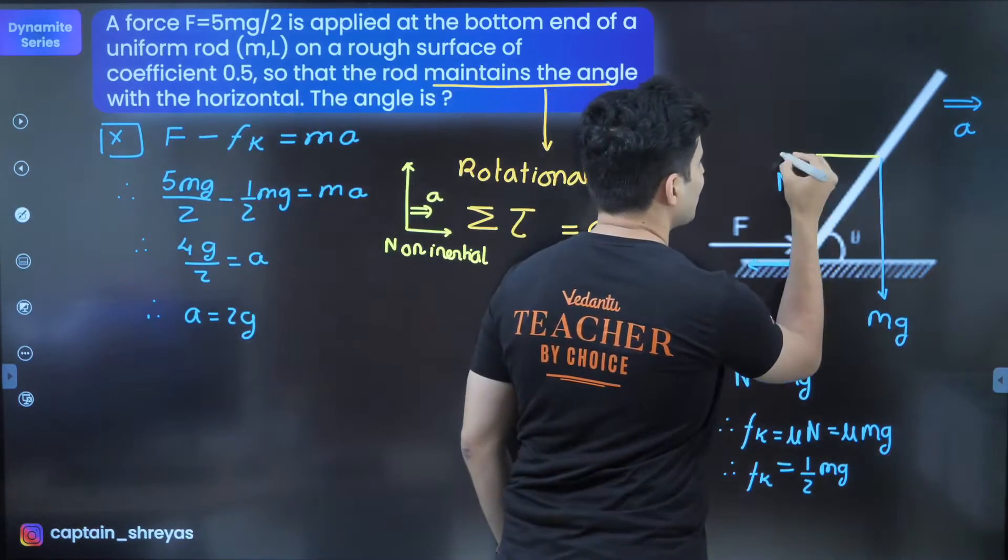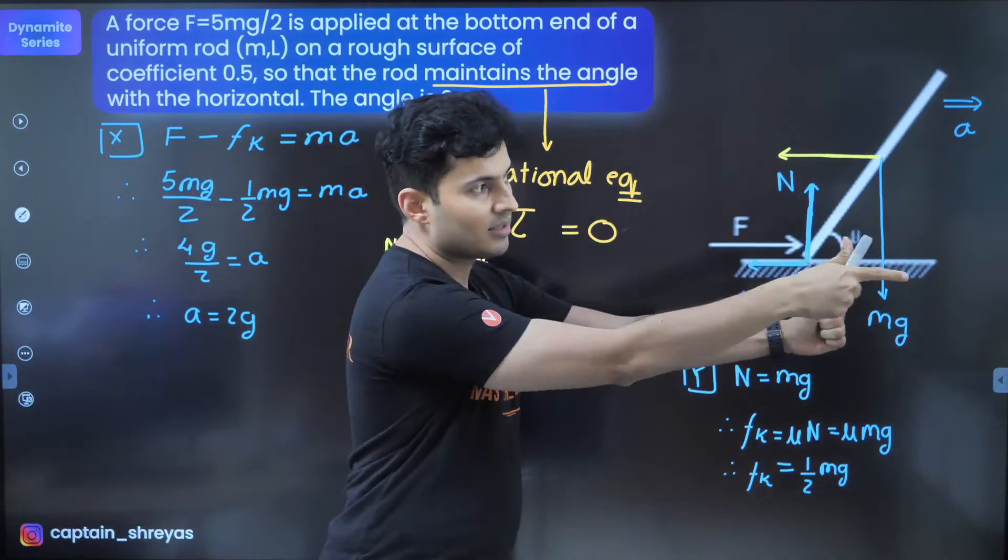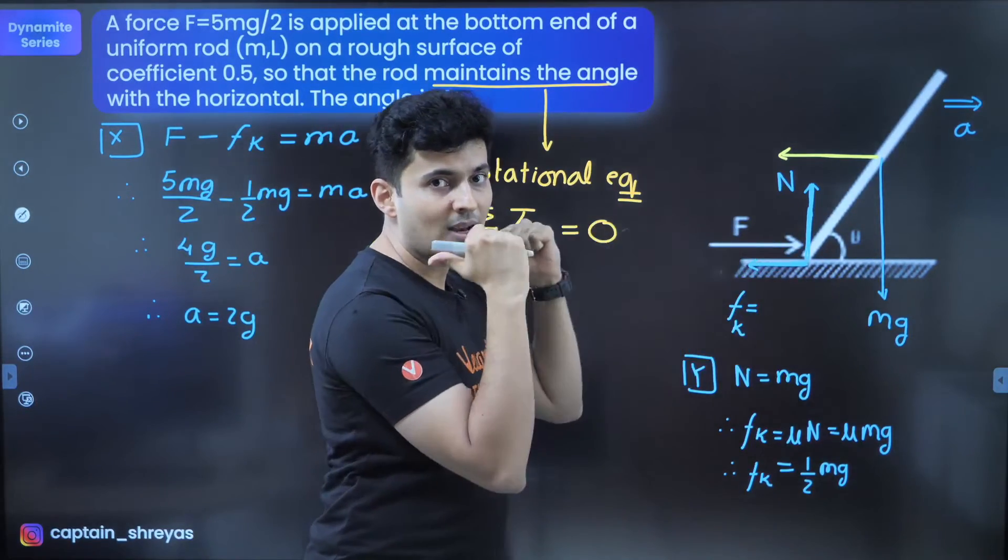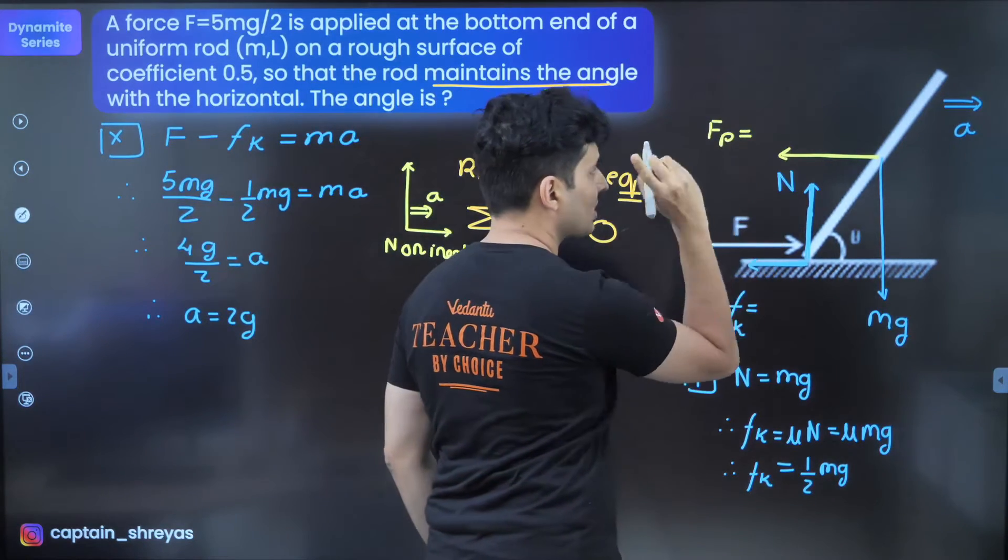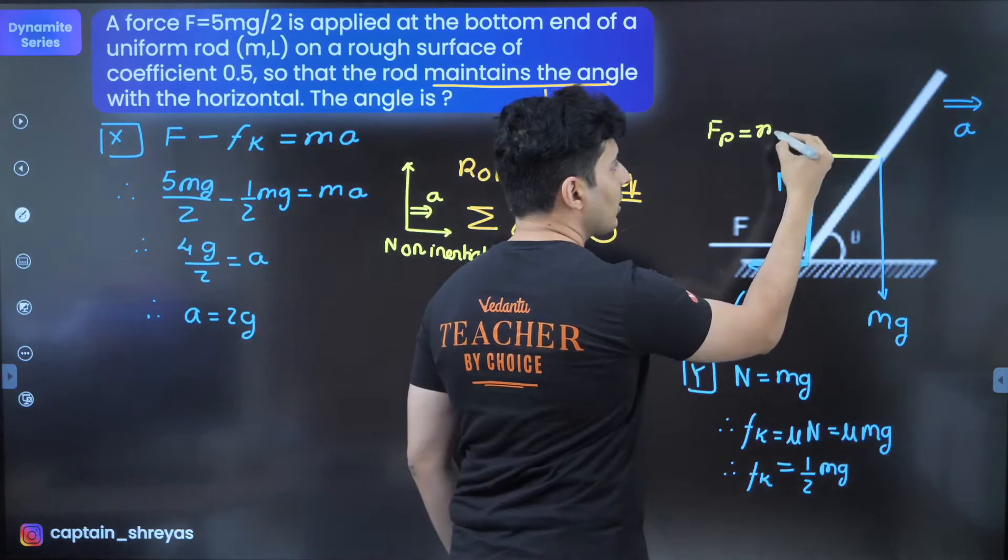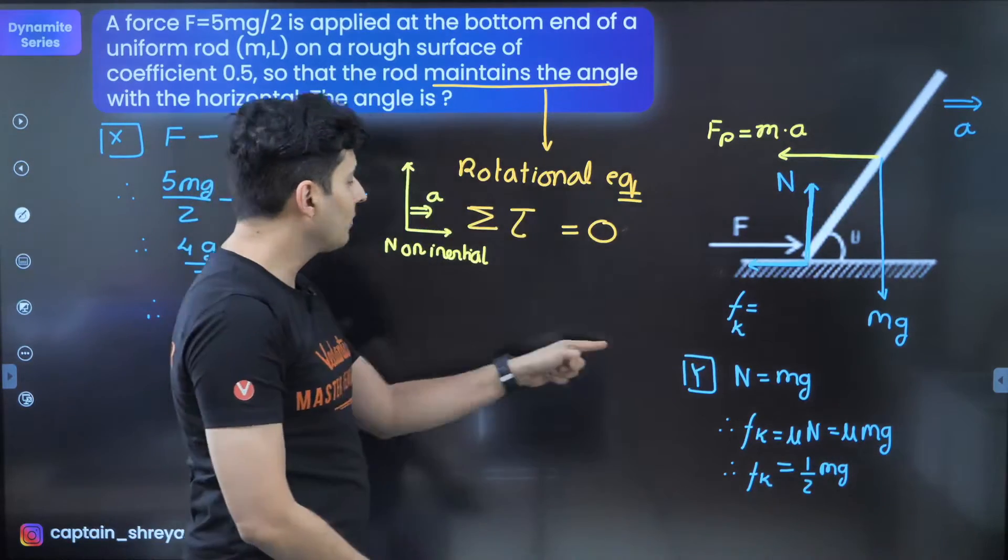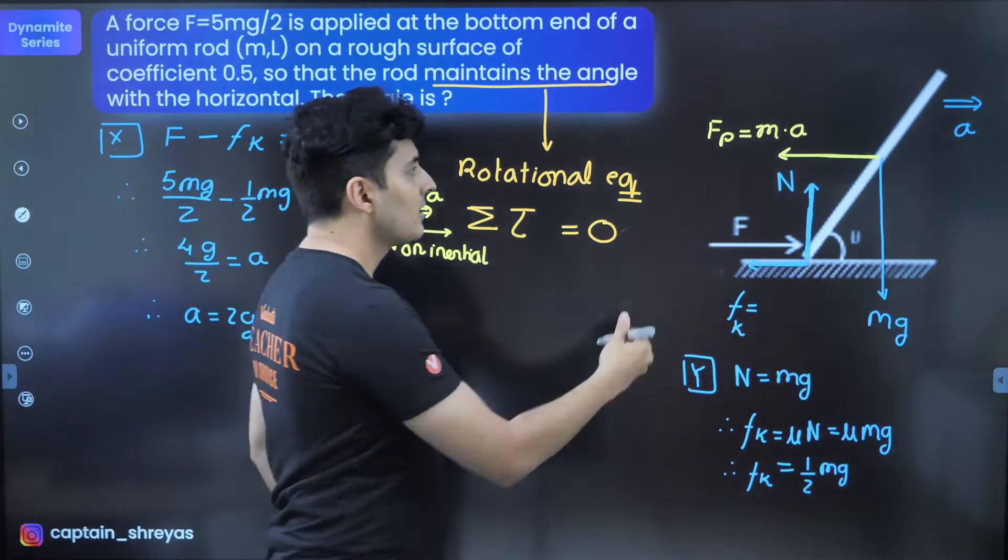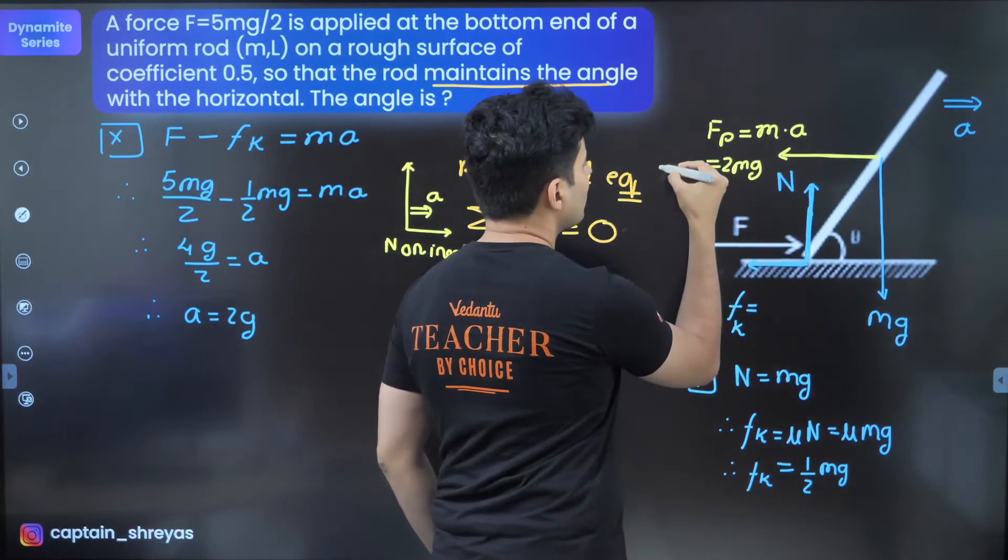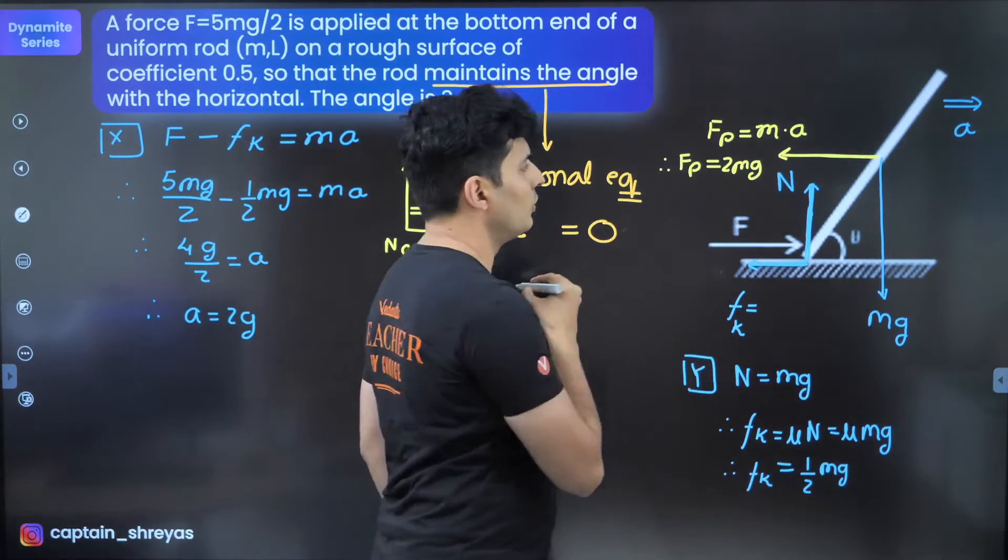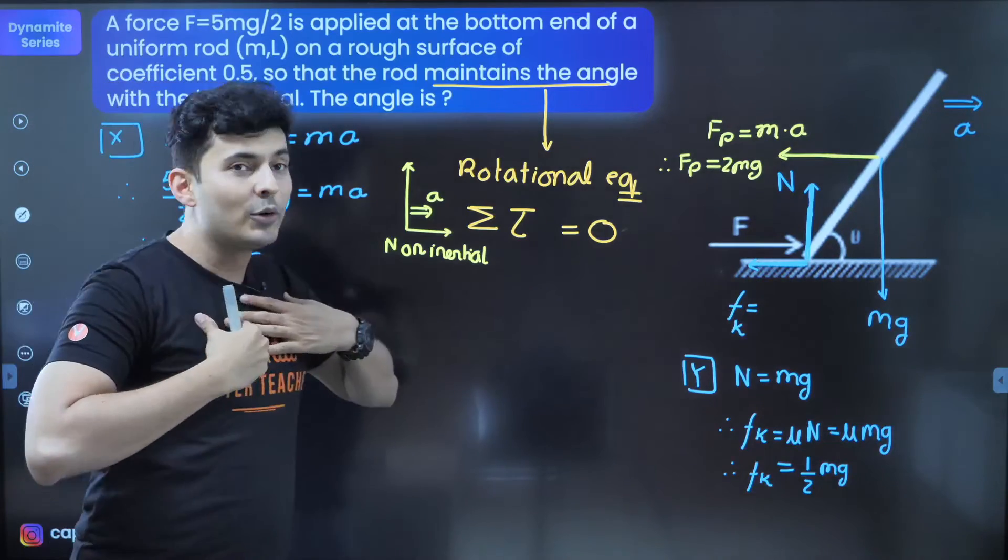If I'm moving with the rod and it's a non-inertial frame, what will come? Pseudo force, right? There should be a pseudo force exactly backwards. Because if you move with the rod, acceleration of the frame is front, so the pseudo force will act behind. The magnitude of this pseudo force will be mass of the rod into acceleration of the frame. The acceleration of the frame I figured out to be 2g. Hence, the value of the pseudo force will come out to be 2Mg. That's the value of the pseudo force. I'm going to need it now.